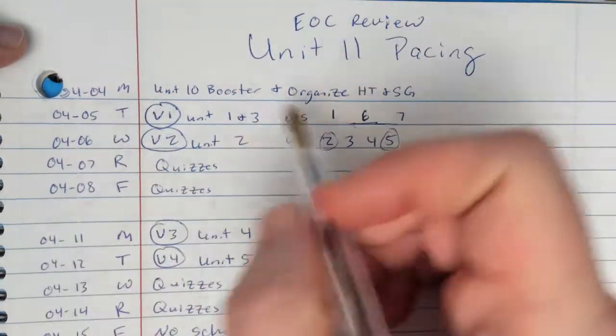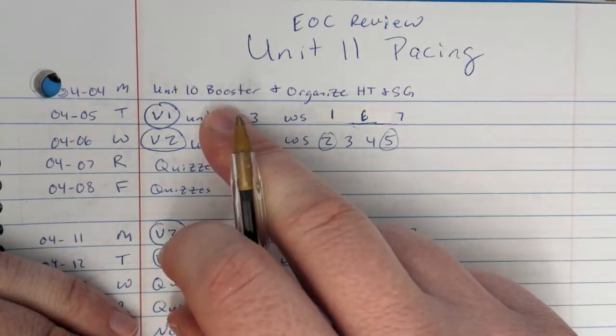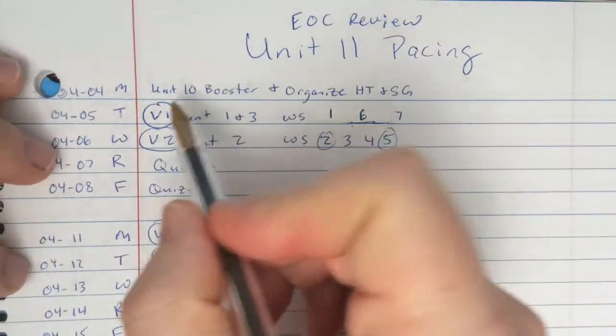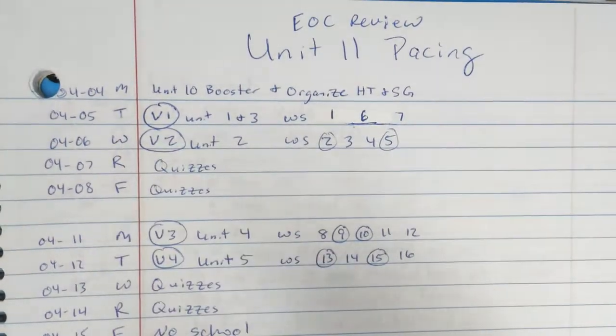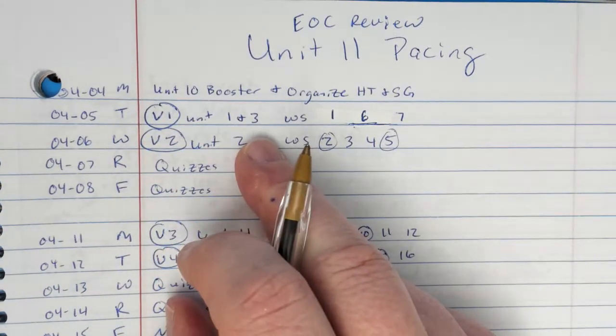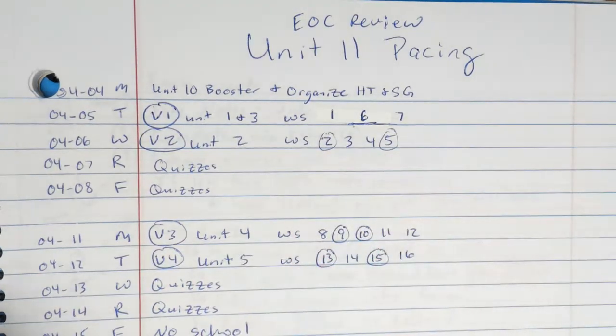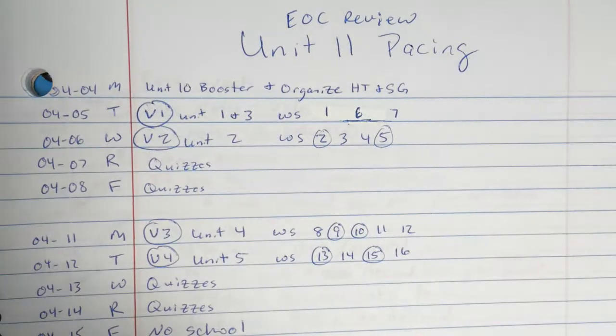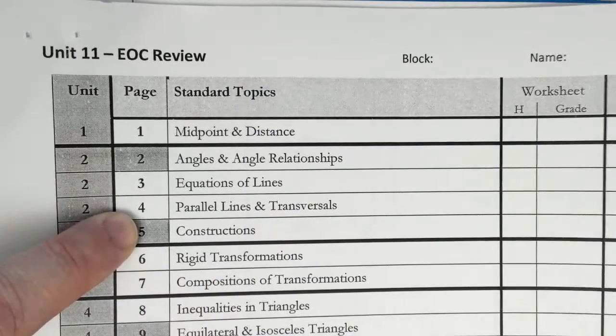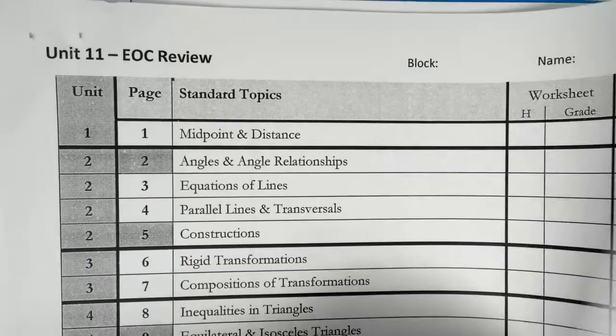So this week, Monday, we're going to spend that day organizing. There's a lot of people who are still working on their booster, some people taking their tests, and we need to organize our Hot Topics and study guide. Tuesday through Wednesday, there's a video that goes over unit one and three, which are these worksheets one, six, and seven. Video two goes over unit two, which are worksheets two, three, four, and five. Why are these circles? They are not top priority. So if you're going to skip anything, those would be the worksheets you would skip. I really highly suggest that you do all of them, though.